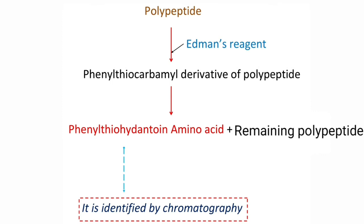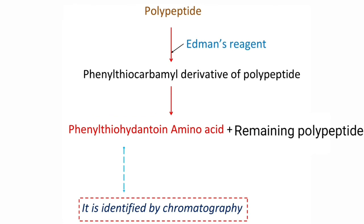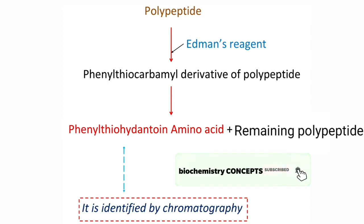The third method is the Edman reaction. Edman's reagent reacts with the polypeptide to form a labeled polypeptide — a phenyl thiocarbamyl derivative. This derivative is subjected to degradation using a mild acid, which releases only one amino acid from the polypeptide as a phenyl thiohydantoin amino acid, identified by chromatography. The Edman reagent then reacts again with the remaining polypeptide chain, releasing the next amino acid in the same form. In this way, sequential degradation of the polypeptide chain with release of N terminal amino acids takes place.